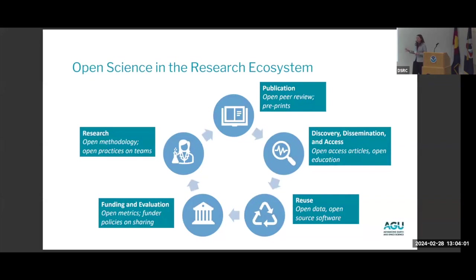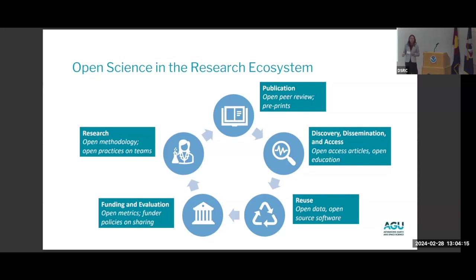I want to talk a little bit about what Open Science is. Open Science means many things to many people — it's a pretty nebulous concept. It's supposed to be increasing access, not just to scientific outputs — so you might think of papers, data, software — but also to the practice of science, to breaking down barriers to have communities who haven't always been engaged in the practice of science to be able to engage with it.